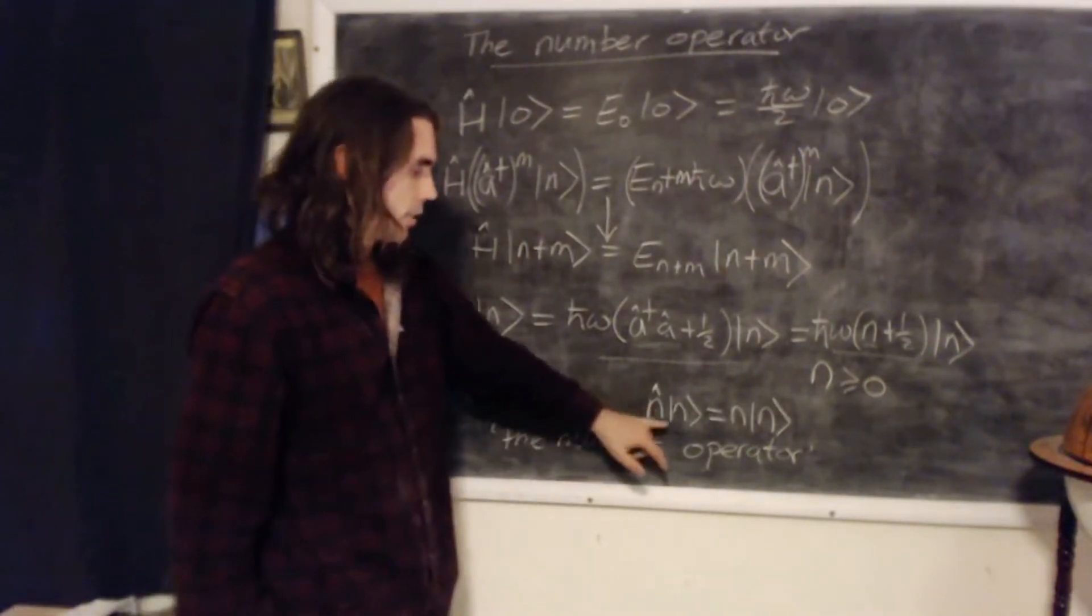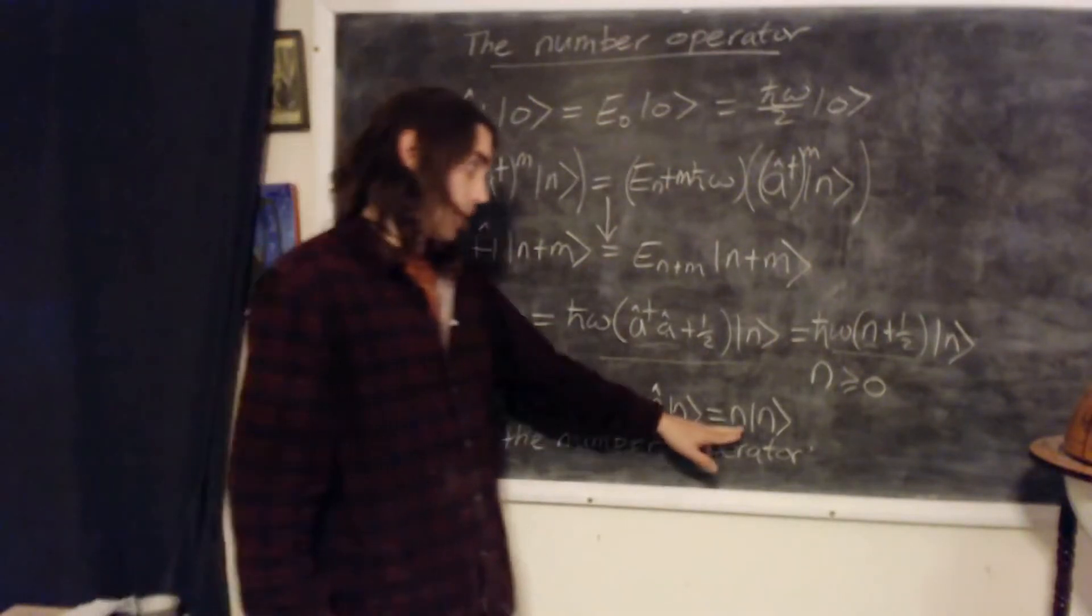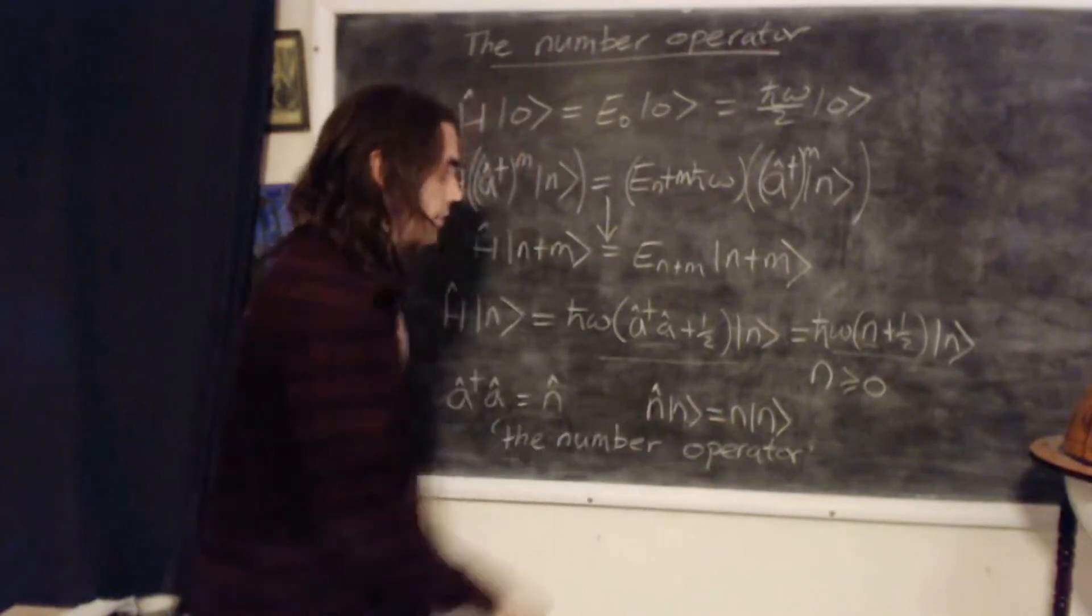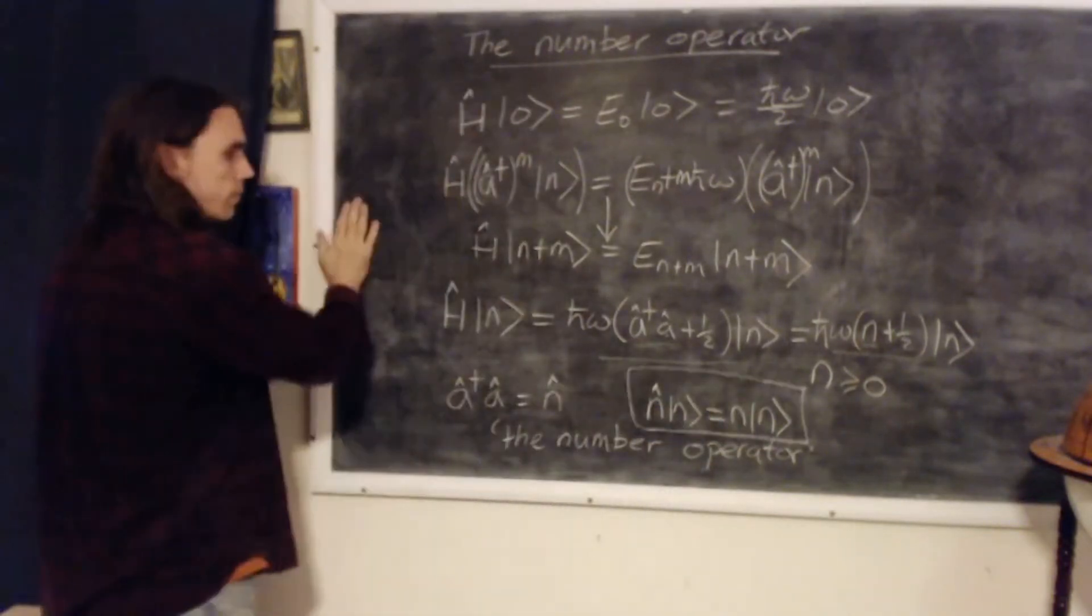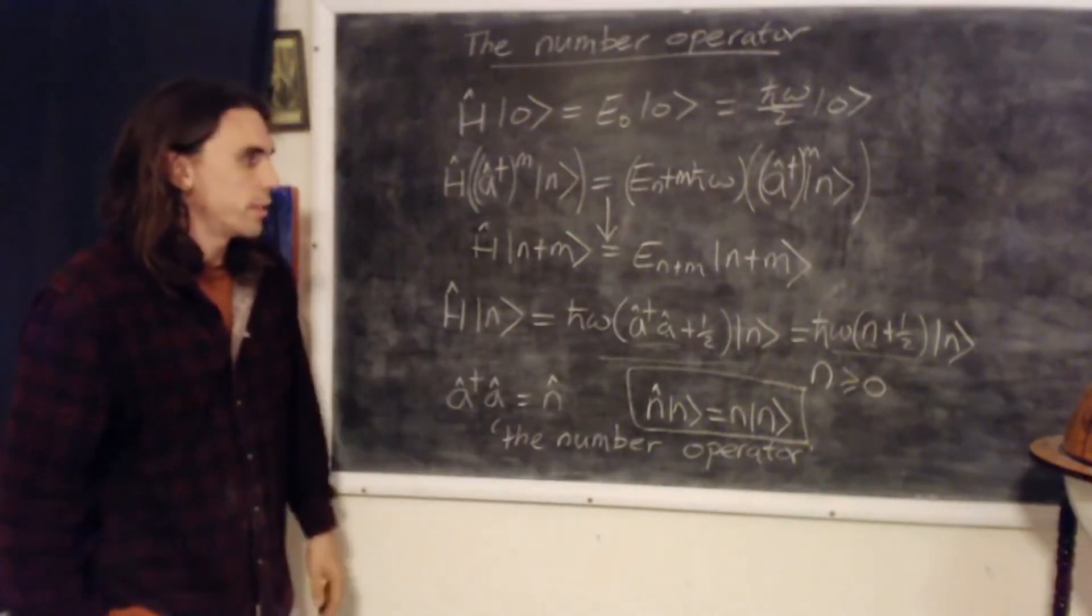The operator n acting on eigenstate n, and it's an eigenstate of the Hamiltonian, gives us back the integer n, labeling the number of the state times the state. So it's an eigenvalue equation for n. So this turns out to be a useful operator to work with in many scenarios.